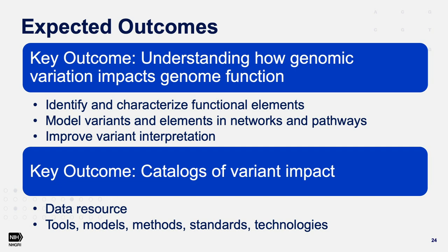A data resource would also be a key outcome, structured to enable machine learning approaches. It would include a database of tested genomic variants reporting functional and phenotypic effects in particular biological contexts, and importantly, predicted effects of untested variants coming out of the predictive modeling centers. All raw and processed metadata would be made available as part of the resource with as few restrictions as possible. Tools, models, methods, standards, best practices, and technological advances are also seen as important outcomes.